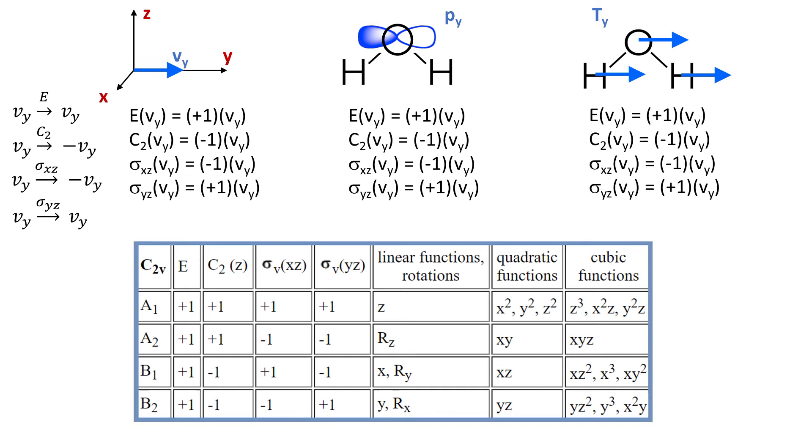And behold, if we do symmetry operations on this ty translational vector, then we get the same series of numbers again. So I deliberately chosen these examples to show you that regardless if we do operations on vy vector, py orbital, or ty translational vector, the result is the same. Basically all we need is a single entity with a sense of direction along y axis.